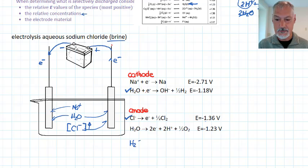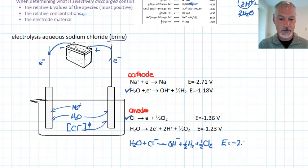If I sum up my overall reactions, in this case then, I have H2O plus Cl minus, producing hydroxide ions, half a hydrogen and half a chlorine gas. And the energy associated with this reaction, negative 2.54 volts. So by the choice of changing the concentrations, I can slightly alter my reaction.